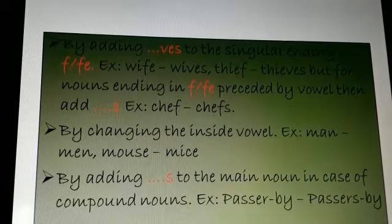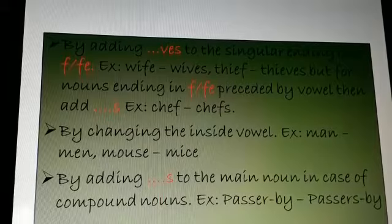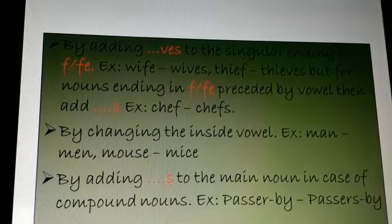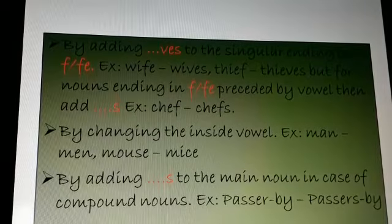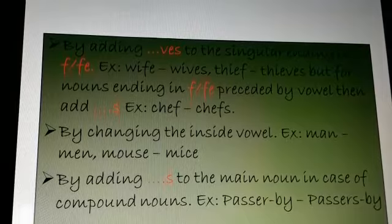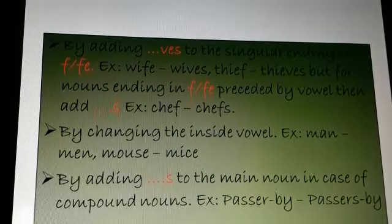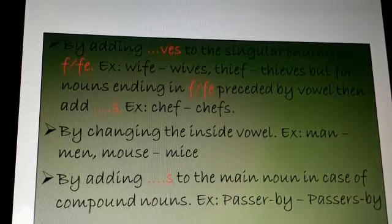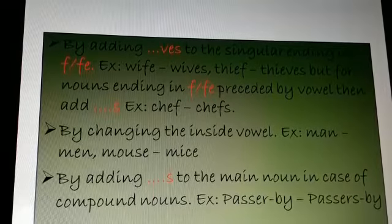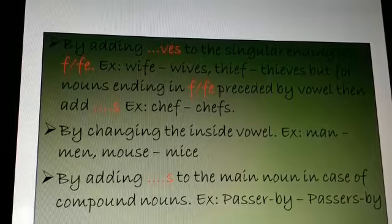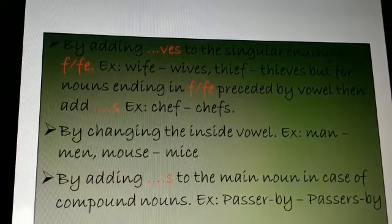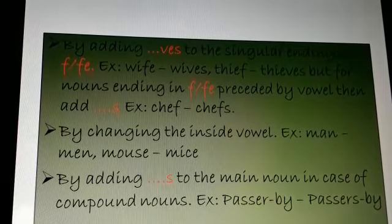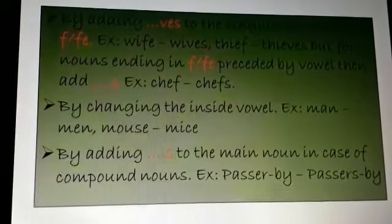The next rule and the last rule is by adding s to the main noun in case of compound nouns. Example, passerby. So what is the main noun over here? The important one. They are talking about the passer. So you are going to add s to the passer and it becomes passersby. So this is how you change it into plural one for compound nouns.